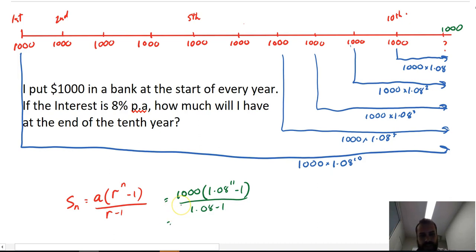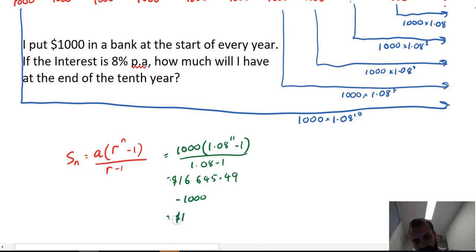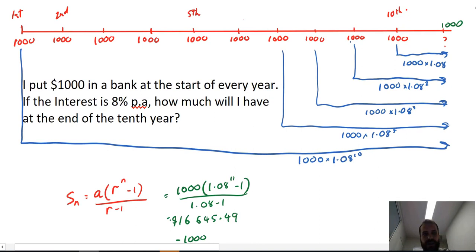And I can put that into my calculator, and I'll have the sum of 11 terms, but I'm not quite finished yet. And that gives me $16,645.49. But I did add in an extra $1,000, because I wanted $1,000 to be my first term. So now I can just get rid of that extra $1,000 minus 1,000. So actually, I'll have $15,645.49 in the bank at the end of the 10th year, if I put $1,000 at the start of every year.